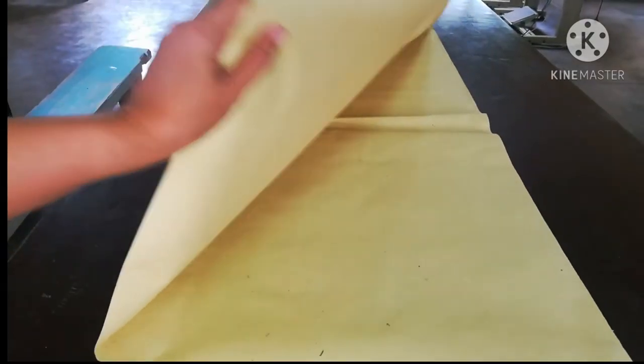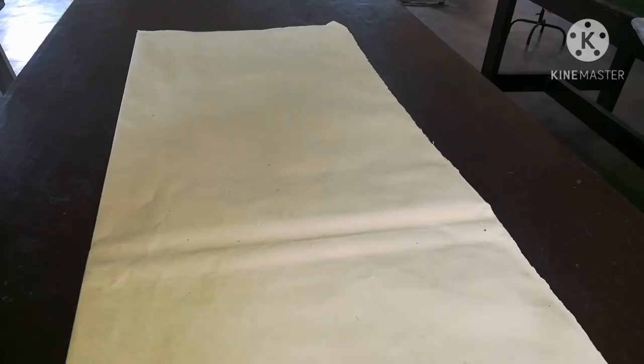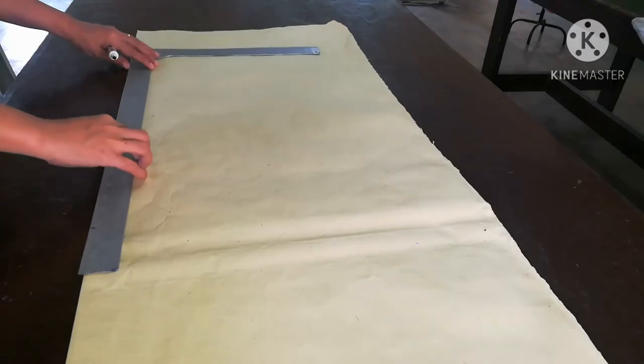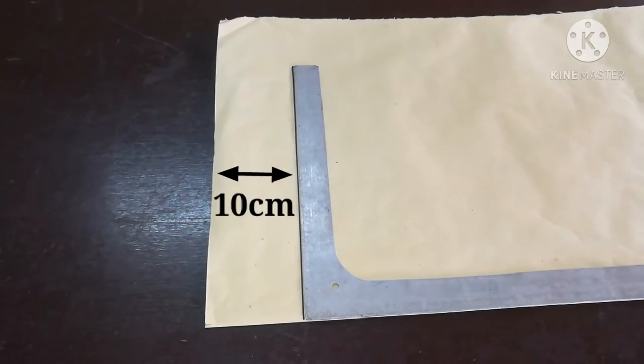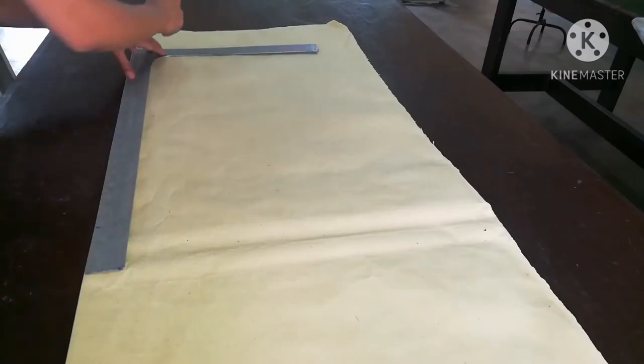Fold the pattern lengthwise and draw the construction line in the folded area. Make sure you have 10 cm allowance on the top edge of the pattern.